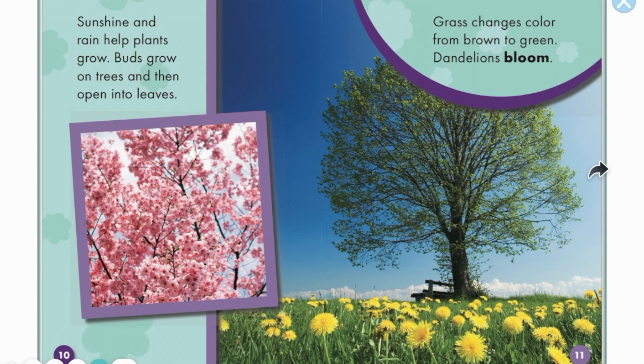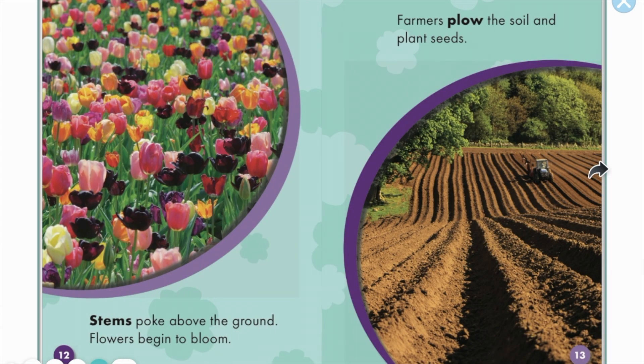Buds grow on trees and then open into leaves. Grass changes color from brown to green. Dandelions bloom. Stems poke above the ground and flowers begin to bloom. Farmers plow the soil and plant seeds.